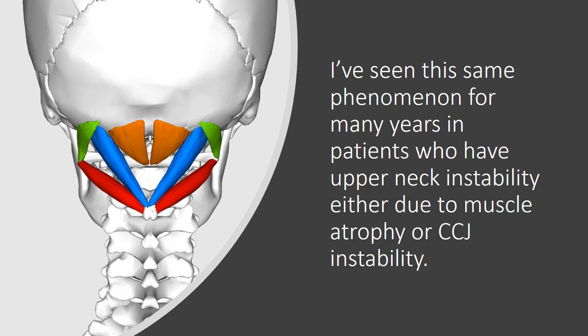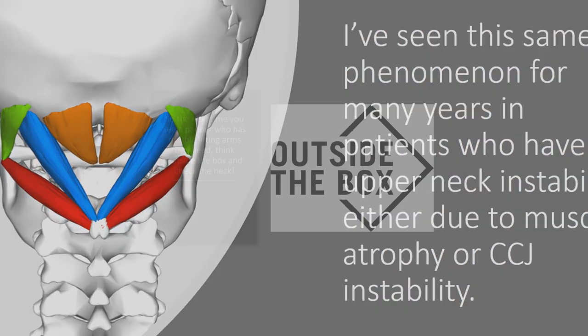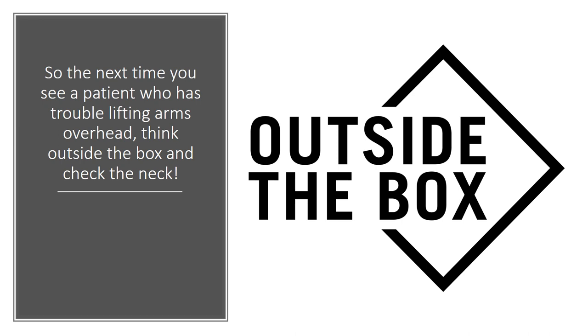I've seen this same phenomenon for many years in patients who have upper neck instability, either due to muscle atrophy or CCJ upper neck instability. So the next time you see a patient who has trouble lifting arms overhead, think outside the box and check the neck. It could be irritated nerves in the neck, or it could be an unstable cervical spine.